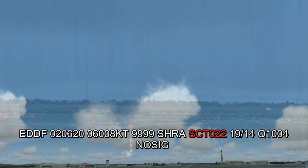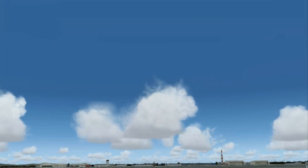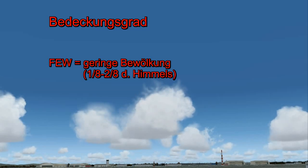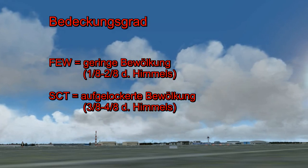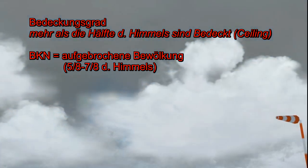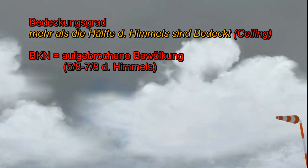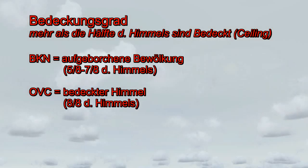Unter Wolken wird der Bedeckungsgrad und die Untergrenze der beobachteten Bewölkung, in Ausnahmefällen auch die Gattung, angegeben. Dabei werden folgende Bedeckungsgrade angegeben: geringe Bewölkung, bei der der blaue Himmel dominiert, mit FEW 1/8 bis 2/8 des Himmels bedeckt; aufgelockerte Bewölkung mit SCT (Scattered) 3/8 bis 4/8; aufgebrochene Bewölkung BKN (Broken), dort ist schon über die Hälfte des Himmels mit 5/8 bis 7/8 bedeckt; und ein komplett bedeckter Himmel mit 8/8, Overcast (OVC).